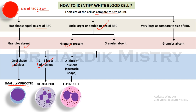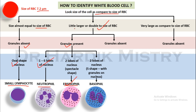If you find 2 lobes of the nucleus arranged in a spectacle shape, then this cell is eosinophil. In the eosinophil, there are 2 lobes of the nucleus arranged in such a way that it looks like a spectacle in shape. Granules are present and the cell is larger or double to the size of RBC. The 2 lobes are arranged in an S shape with granules on the nucleus.